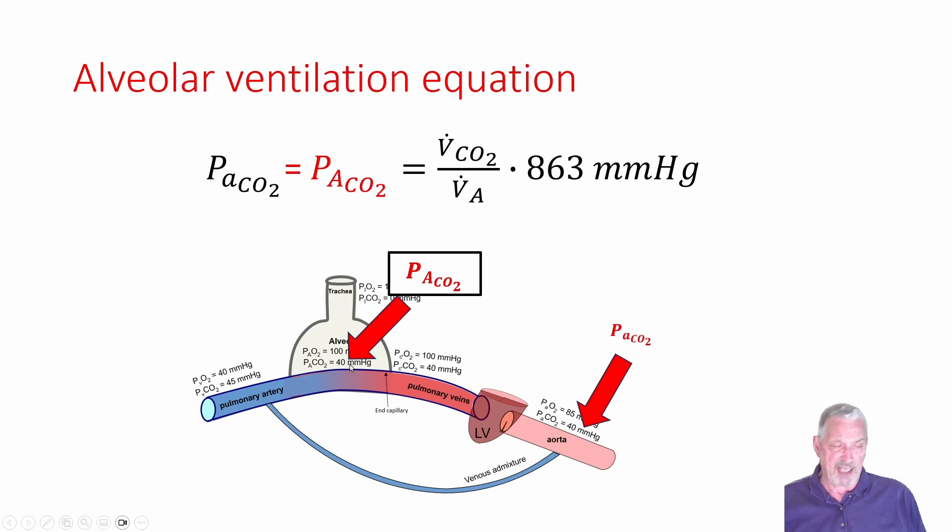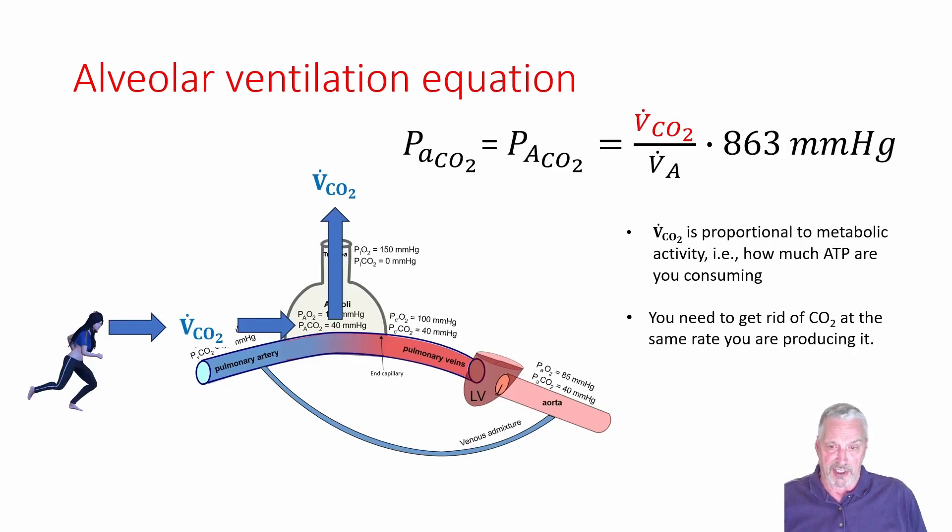But numerically, the air has 40 millimeters of mercury. The end capillary blood has 40 millimeters of mercury. And the artery has 40 millimeters of mercury. So what we're going to learn here is that we can use the arterial CO2, a sample from the patient's blood, to tell us something about what was in the patient's air and know with some confidence that those things are equivalent to each other.